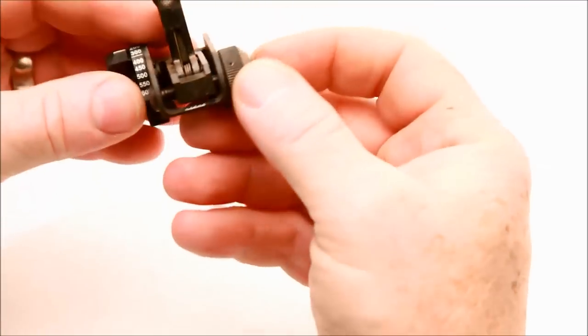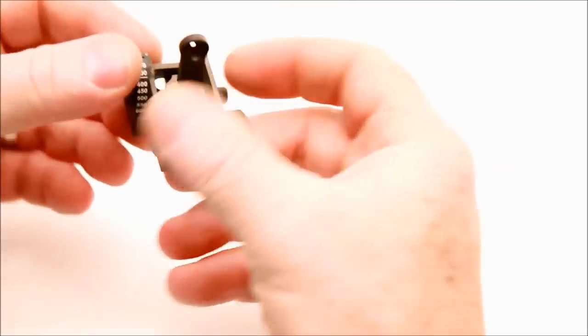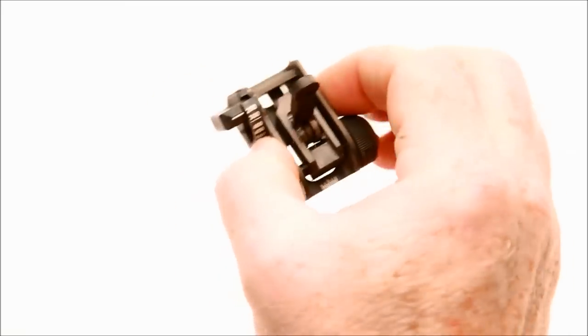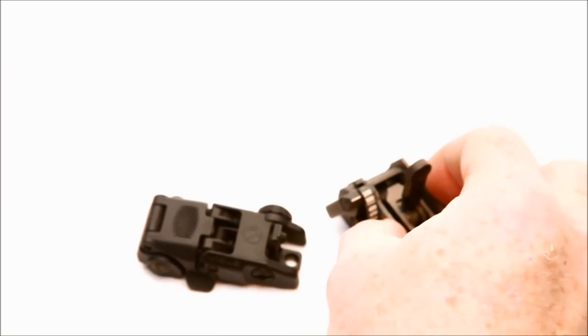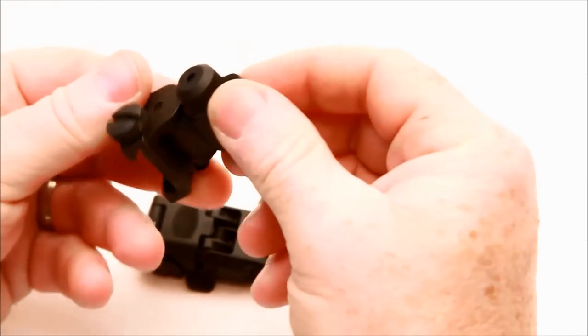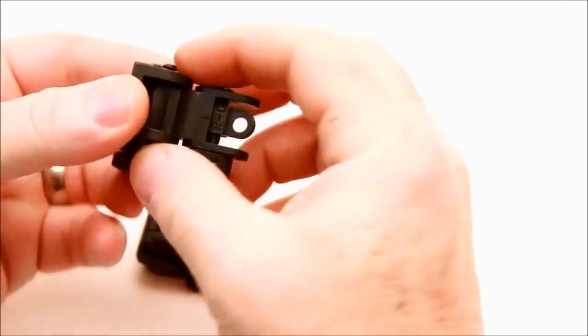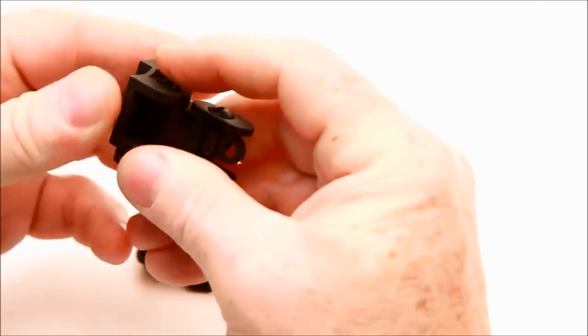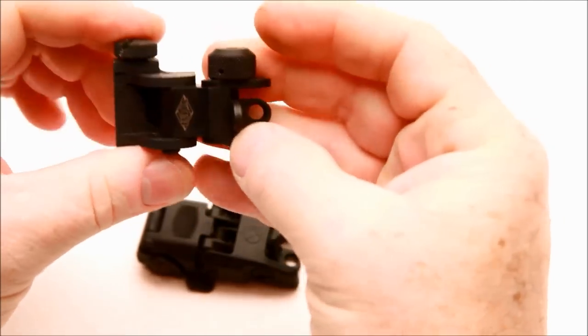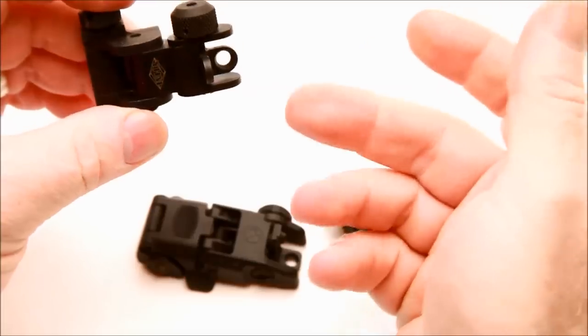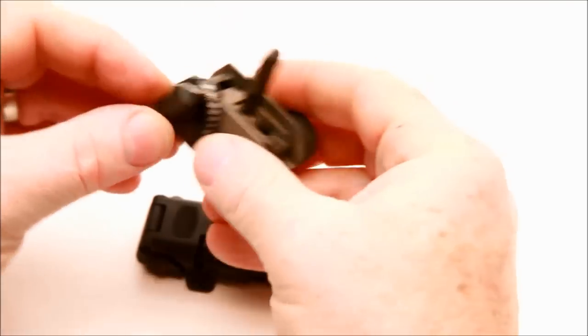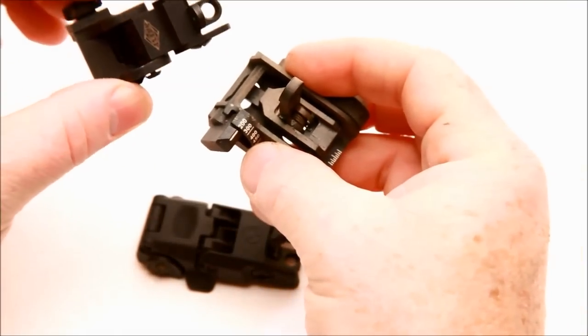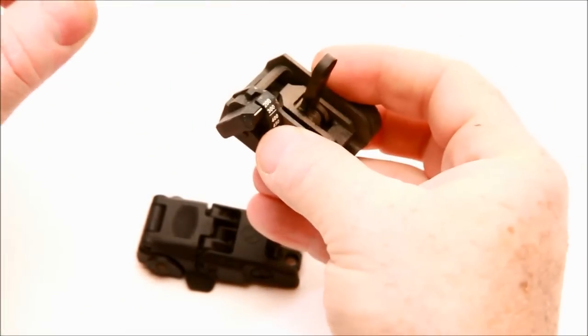Let's compare it to say the Magpul M-BUS and for shits and giggles, let's break out the Yankee Hill flip up iron sight. Now, this guy right here, I run a couple of these on multiple rifles, I like it. It's a good solid backup iron sight. It does have the mobile peepholes. This one right here, very solid. These two are similar, just the steel, the gauge of steel is very similar.